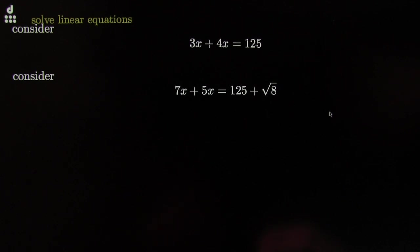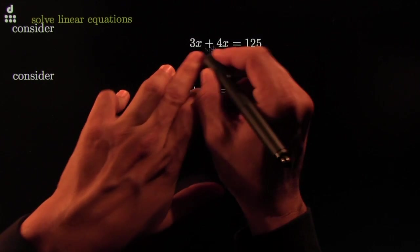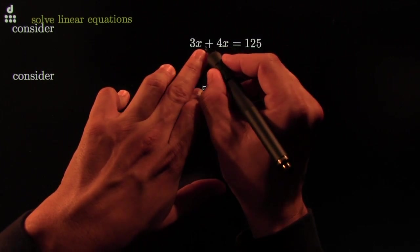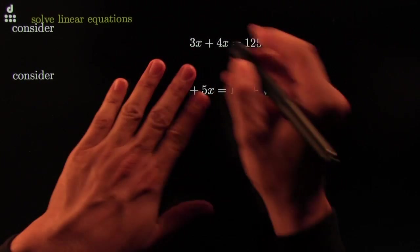For example, this one, or these two. Take this one. You have more than one x. I have three x's and a 4x, and that's equal to 125.